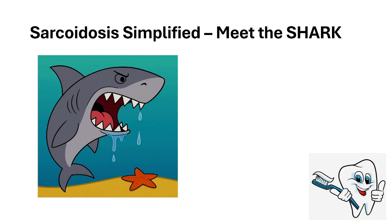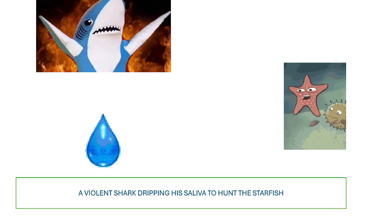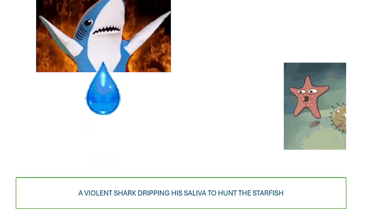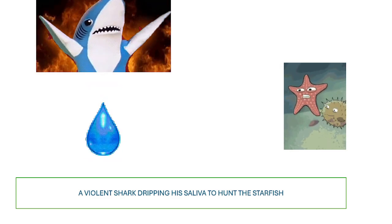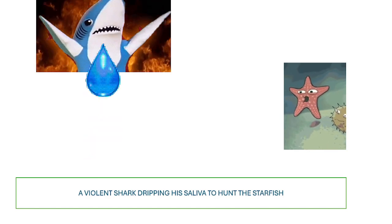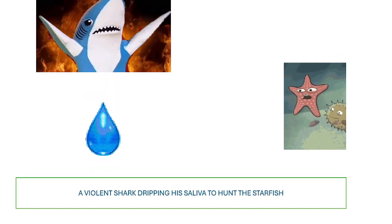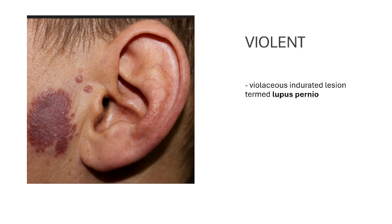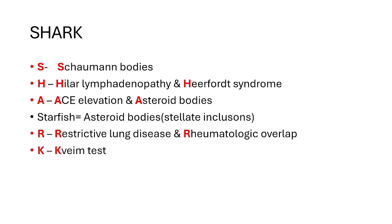In the GIF, there's a violent shark dripping saliva, eager to hunt the starfish, who cries 'Oh no, please don't eat me!' Let's break it down. 'Violent' stands for the violaceous indurated lesion seen in sarcoidosis, as shown in the figure. These lesions are termed lupus pernio. Now coming to the acronym SARC — this is very important.